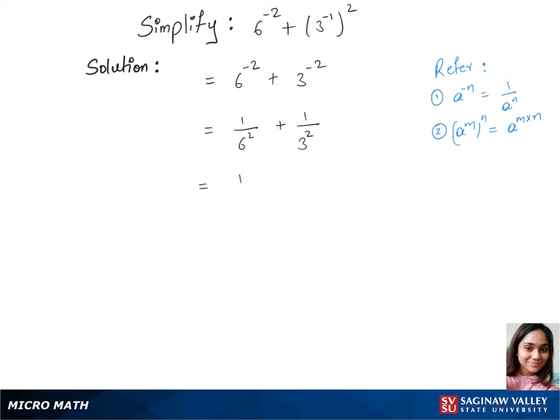Now we have 1 over 6^2 is 36, plus 1 over 3^2 is 9. In our next step we'll just add all this up. So we have the denominator 36 and the numerator we have 1 plus 4.